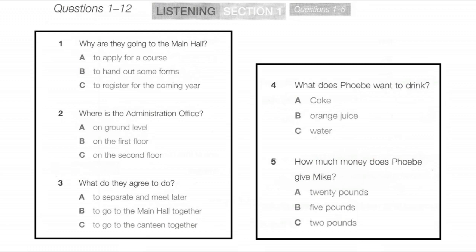Now turn to section one. Section one: you will hear three conversations, the first and the third between two students and the second between a student and a clerk. First you have some time to look at questions one to five. Now we shall begin. You should answer the questions as you listen because you will not hear the recording a second time. Listen carefully and answer questions one to five.